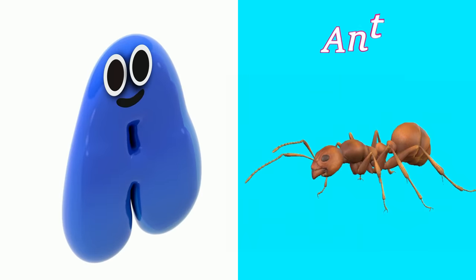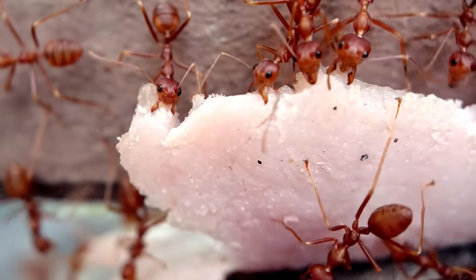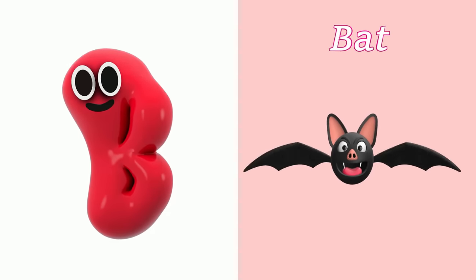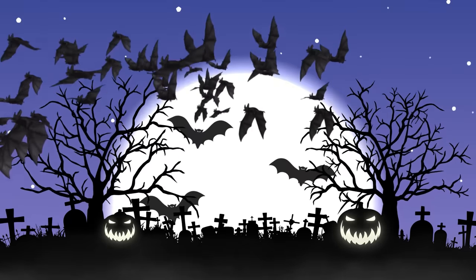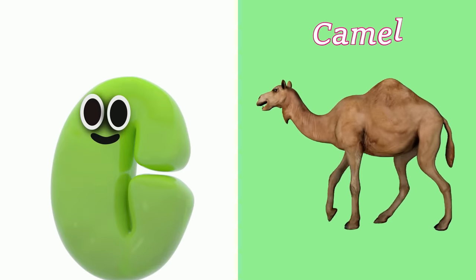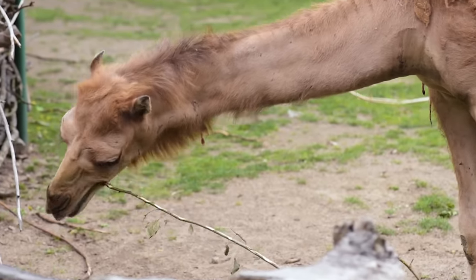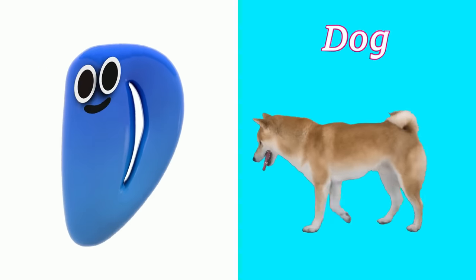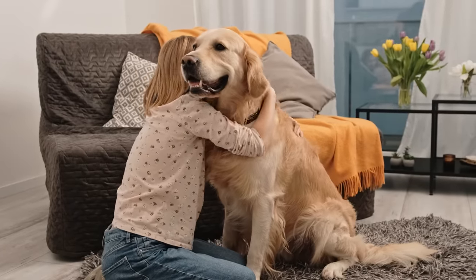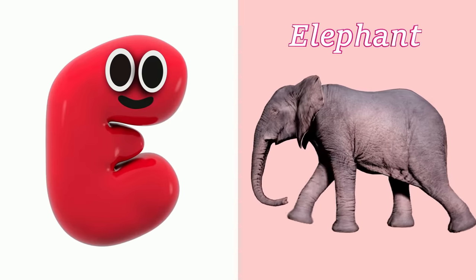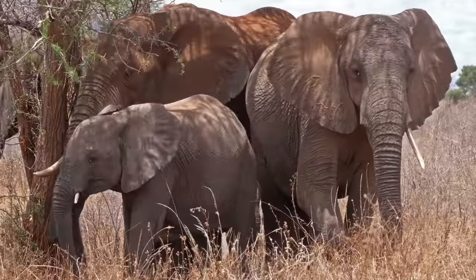A is for Ant. A, A, Ant. B is for Bat. B, B, Bat. C is for Camel. C, C, Camel. D is for Dog. D, D, Dog. E is for Elephant. E, E, Elephant.